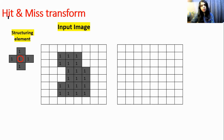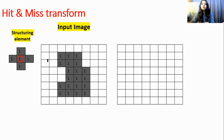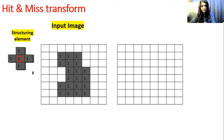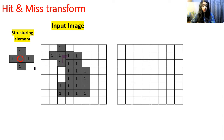Now let's understand how to perform hit and miss transform. This is the input image shown with white boxes and gray boxes — white indicates one and gray indicates zero. This is the structuring element; the label '1' here is just a symbol. First, you overlay the structuring element at the first position — only one pixel is overlapping, so it is a hit position. Then shift the structuring element to the right; at the next position, three pixels are overlapping, so again it is a hit position.